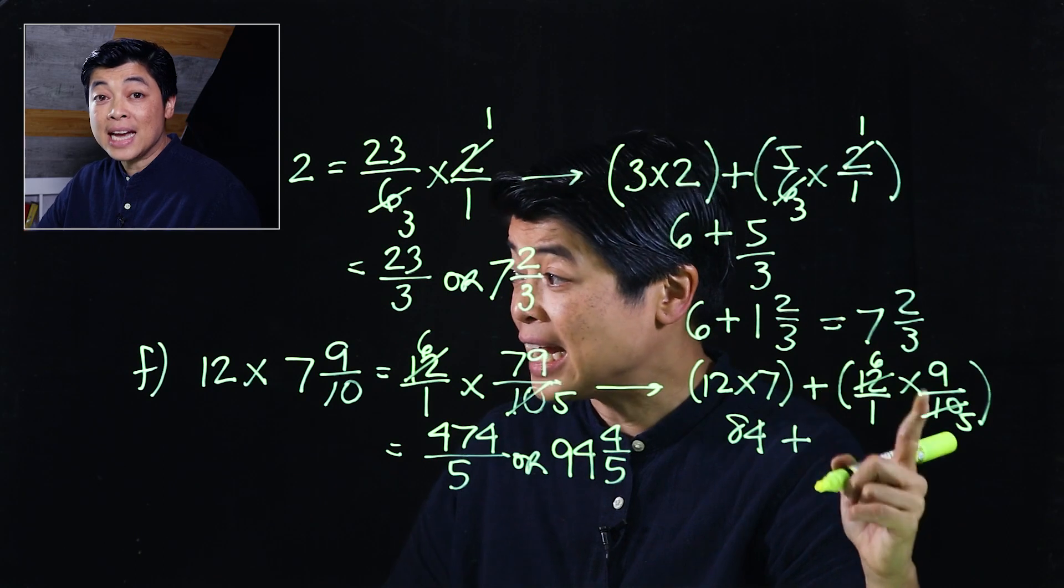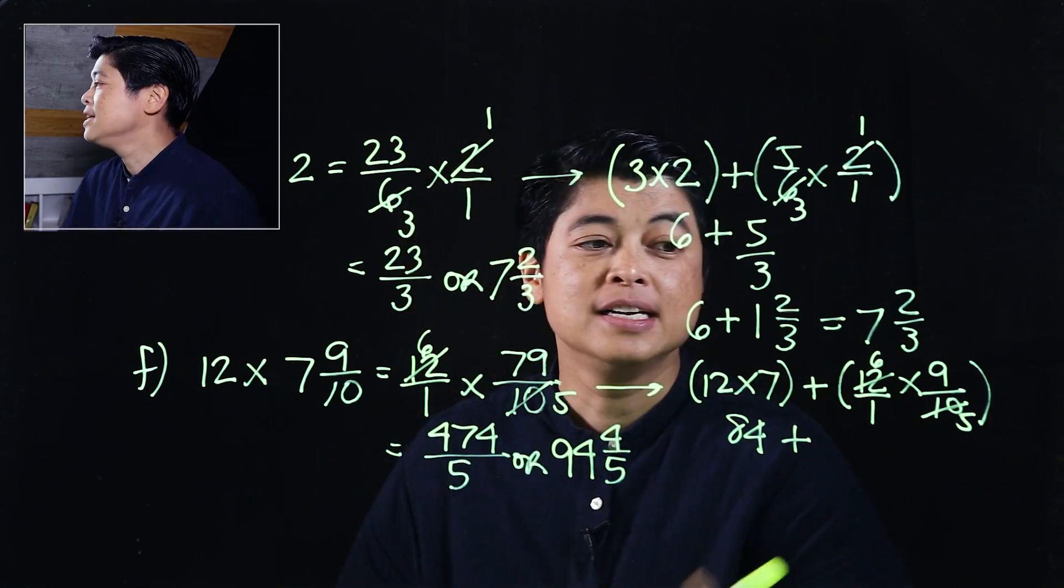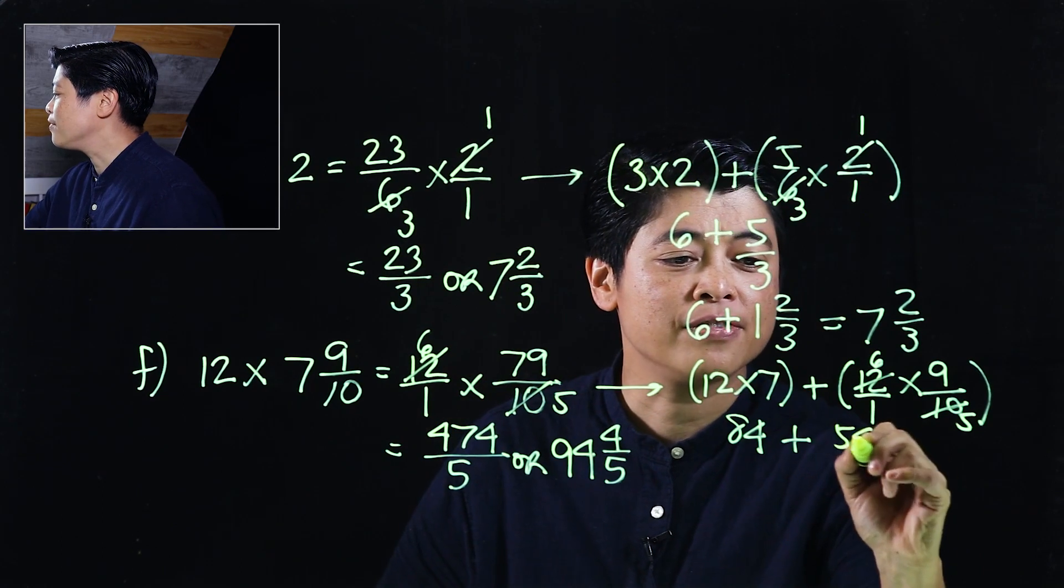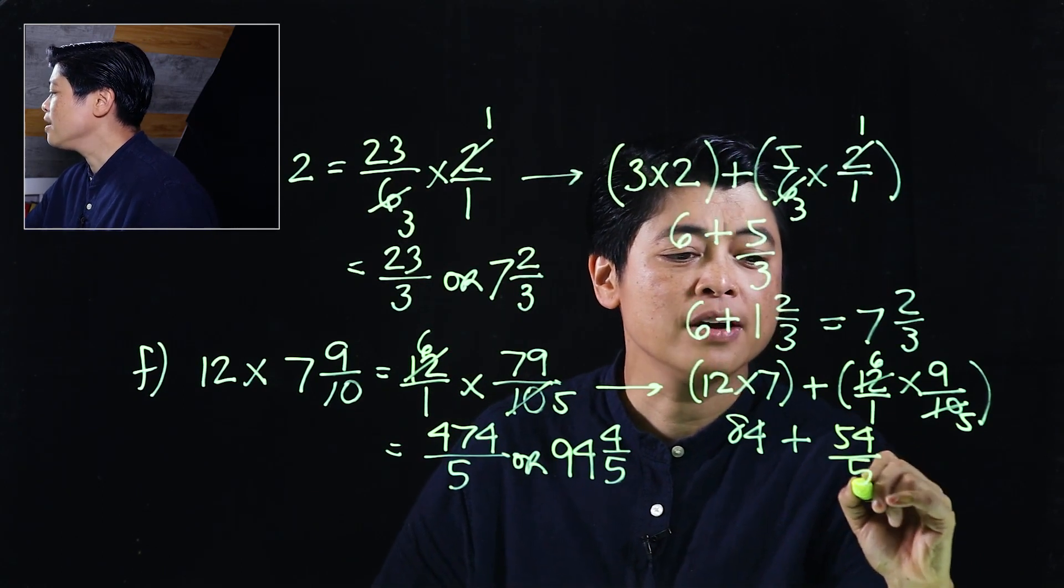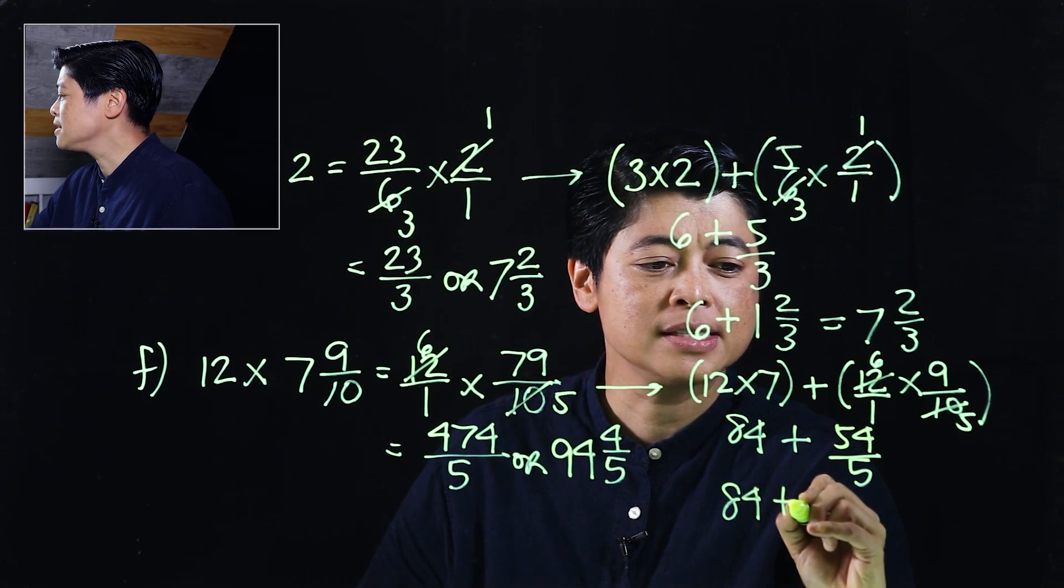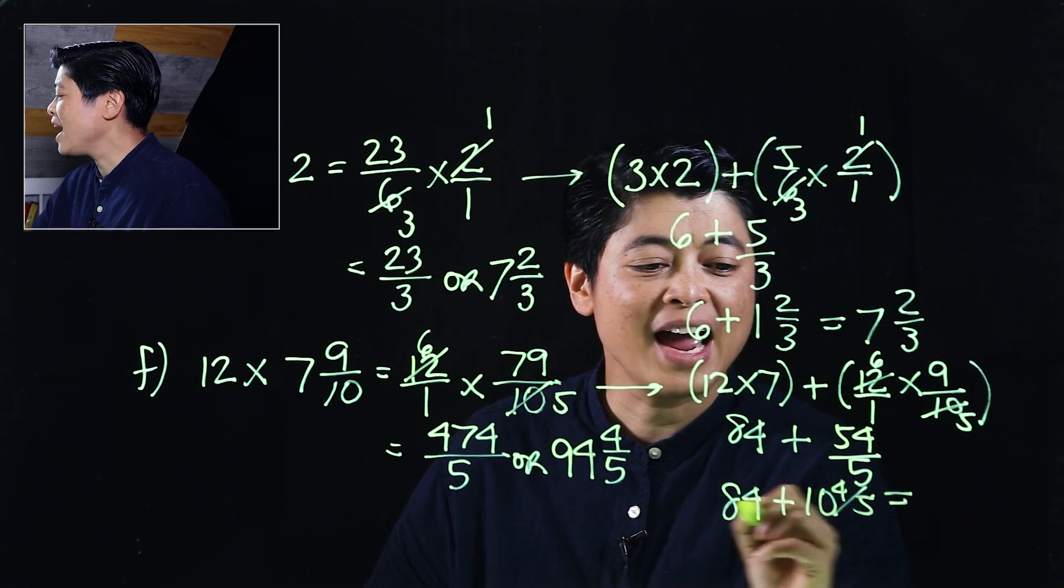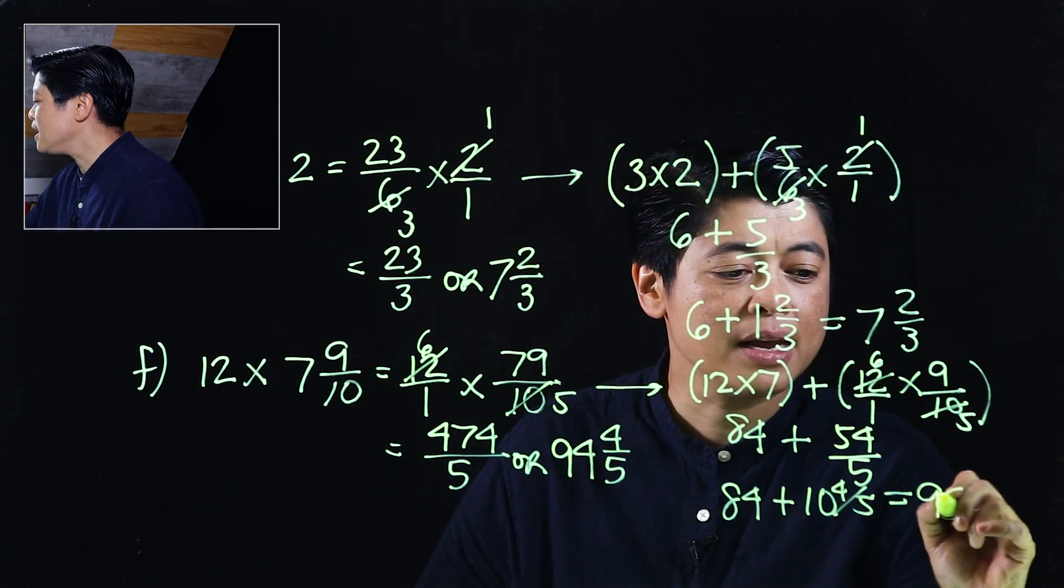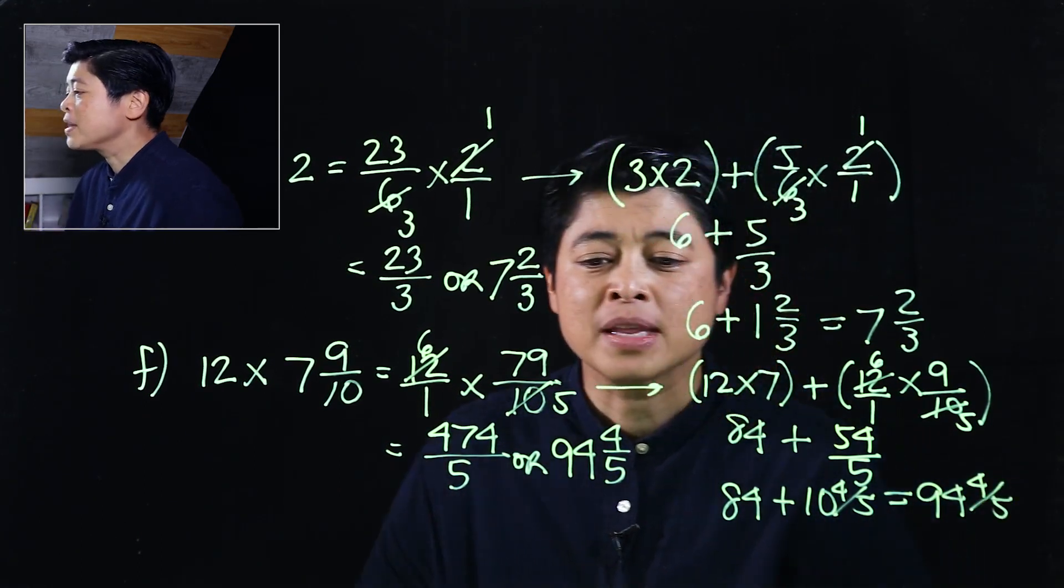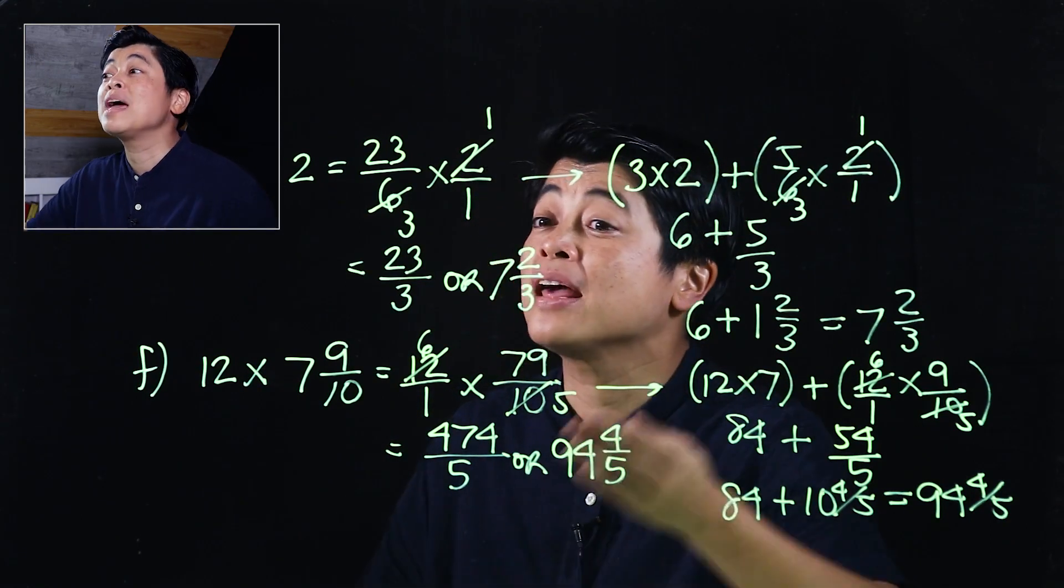So clearly 6 times 9 is more manageable than 79 times 6. So 6 times 9 is 54 over 5 which means this is 84 plus 10 and 4 fifth. So if we add those two together that will be 94 and 4 fifth. So this is why we cannot dismiss one method.